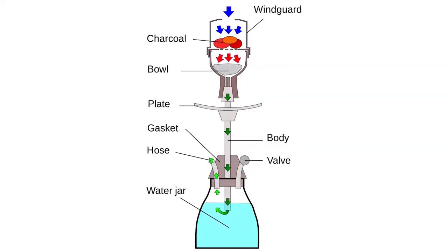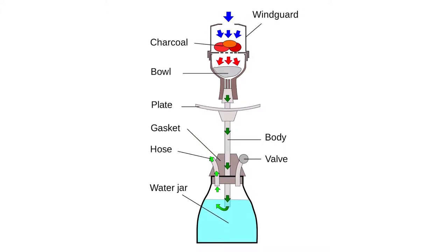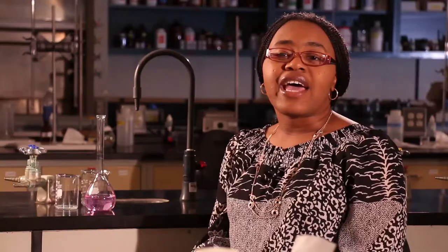Hookah is a water pipe that's used primarily for smoking tobacco, but people also use it to smoke marijuana. It is an apparatus that has a mouthpiece connected to a water container, and people often put flavored tobacco in it.